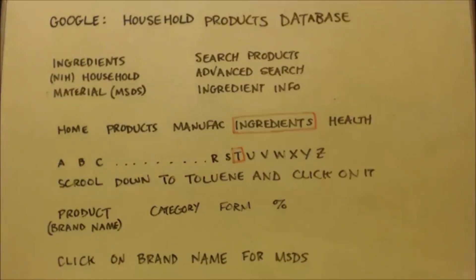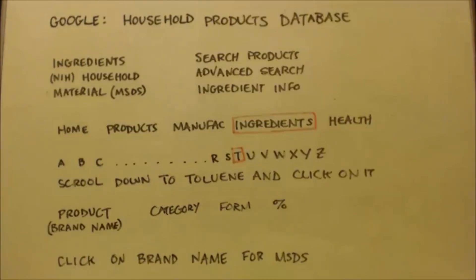Then you'll see the next page — you'll have A, B, C — the alphabet written there. Now, let's say my buddy's looking for toluene, so we're looking for toluene. I click on T, scroll down to where it says toluene, and I click on it.